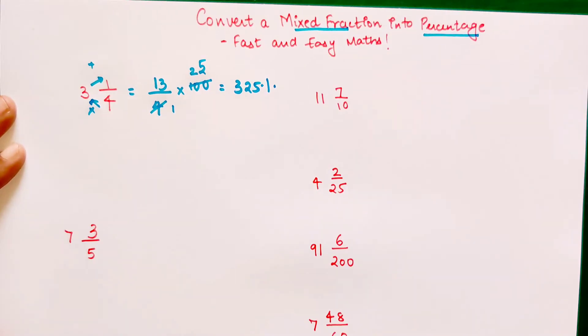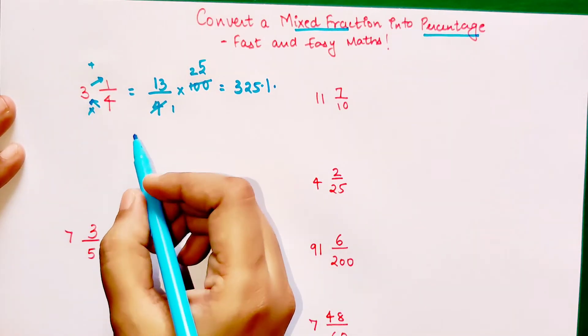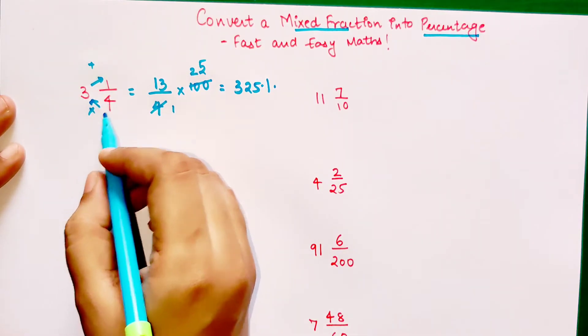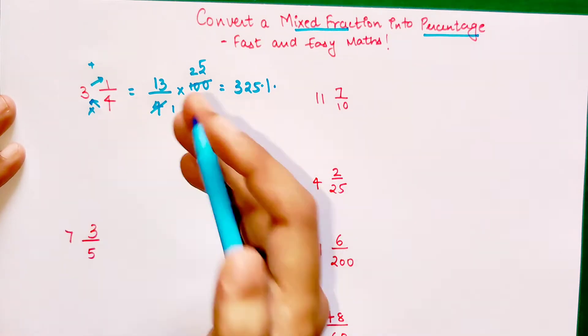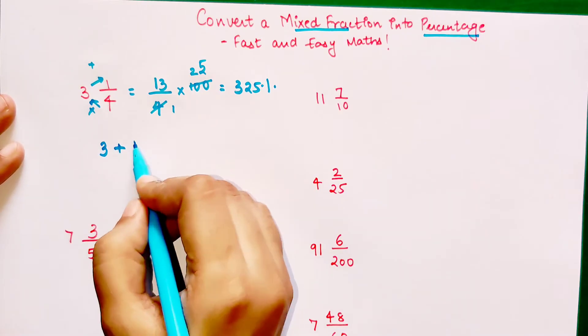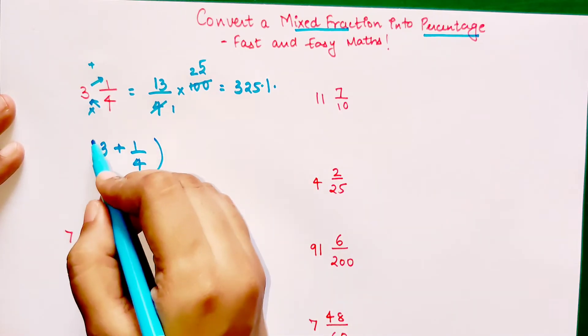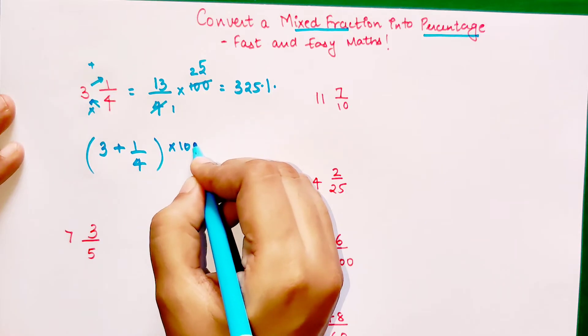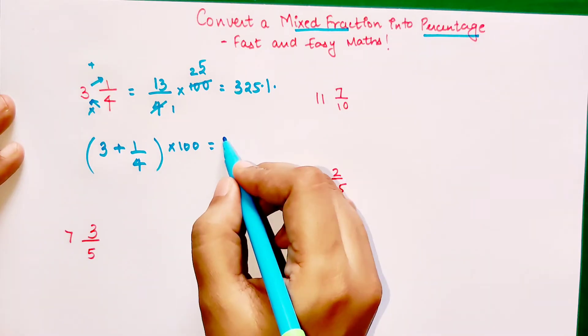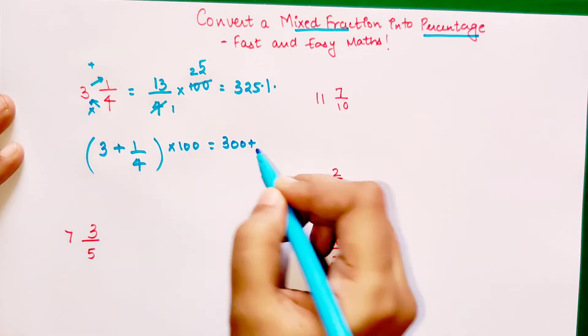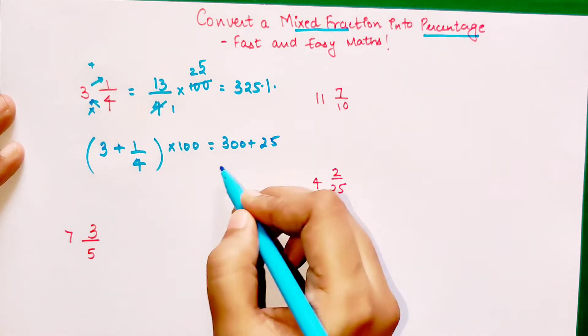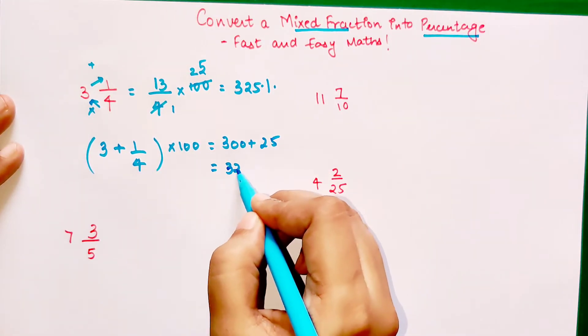Now coming to the part where I'll show you my trick. The trick is to split the mixed fraction as number and fraction. So you do 3 plus 1/4, then multiply it by 100. You directly get 3 into 100 which is 300, and 1/4 into 100 is 25. So 300 plus 25 is 325 percent.